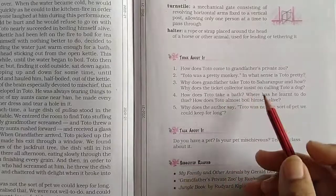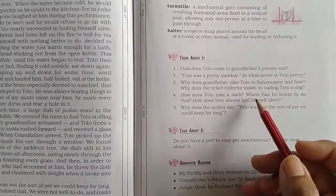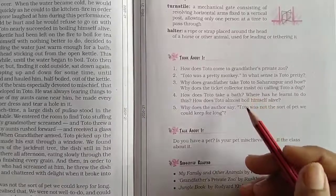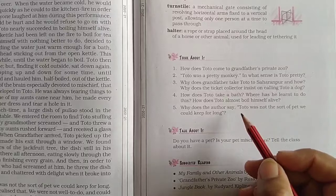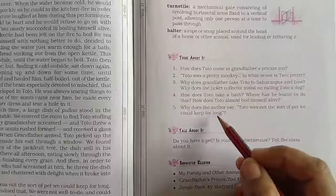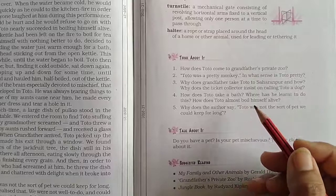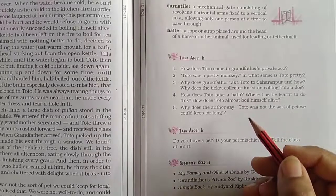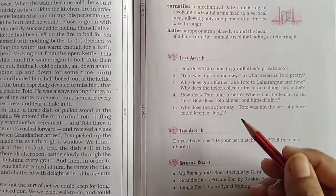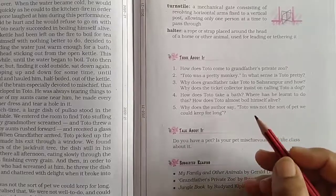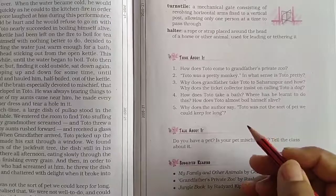Toto was put in his big black canvas kit bag with some straw at the bottom. When the bag was closed, Toto could not escape. He stayed in the bag till Saharanpur. When grandfather was giving his ticket to the ticket collector, Toto suddenly thrust his head out of the bag and gave the ticket collector a wide grin.